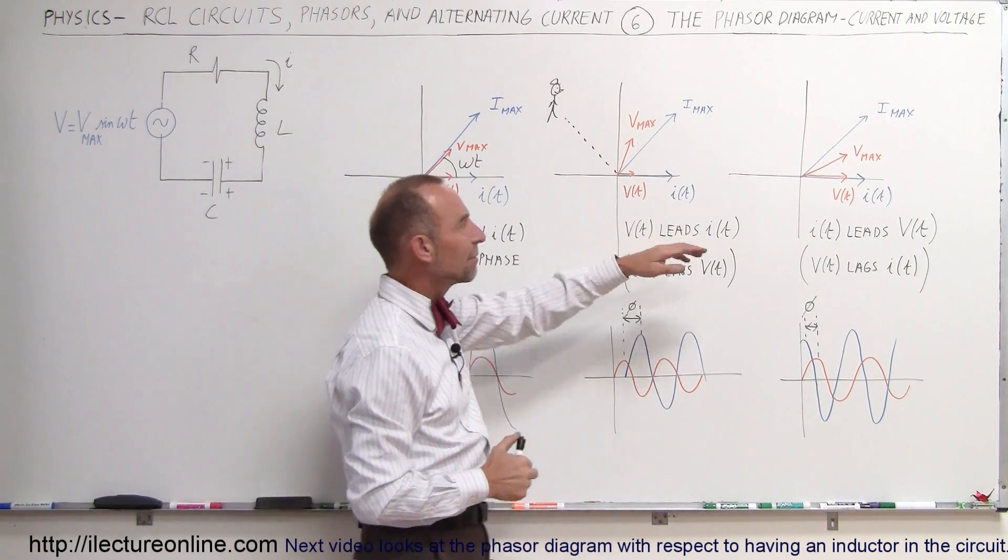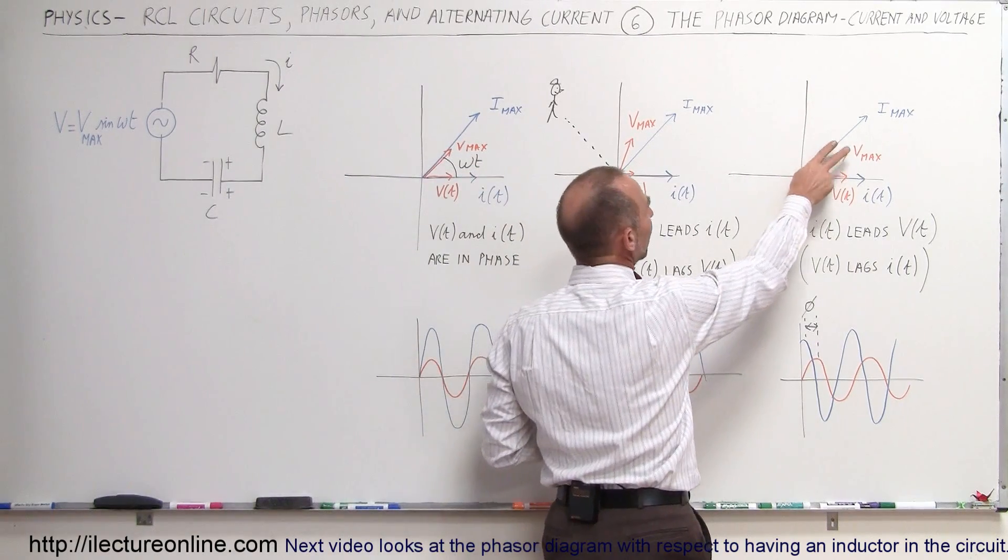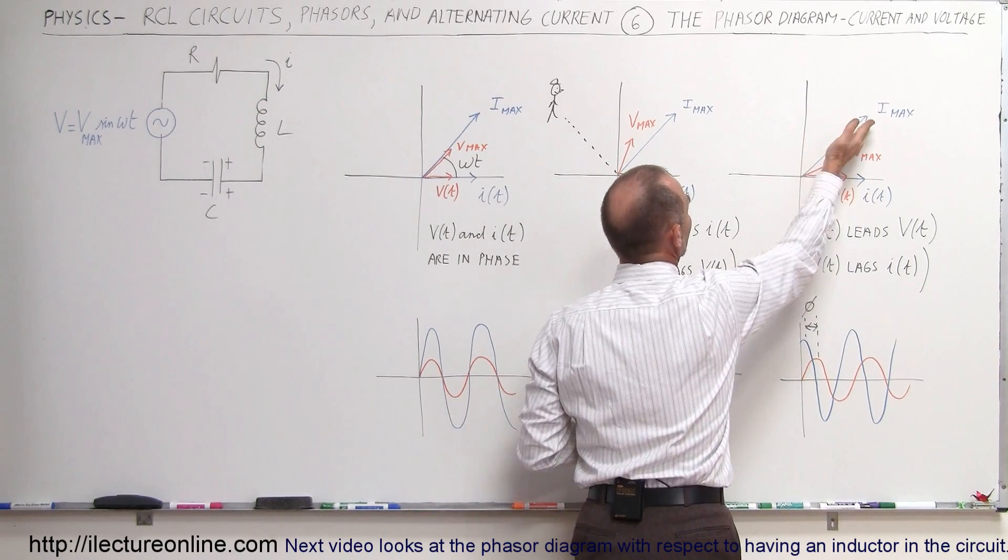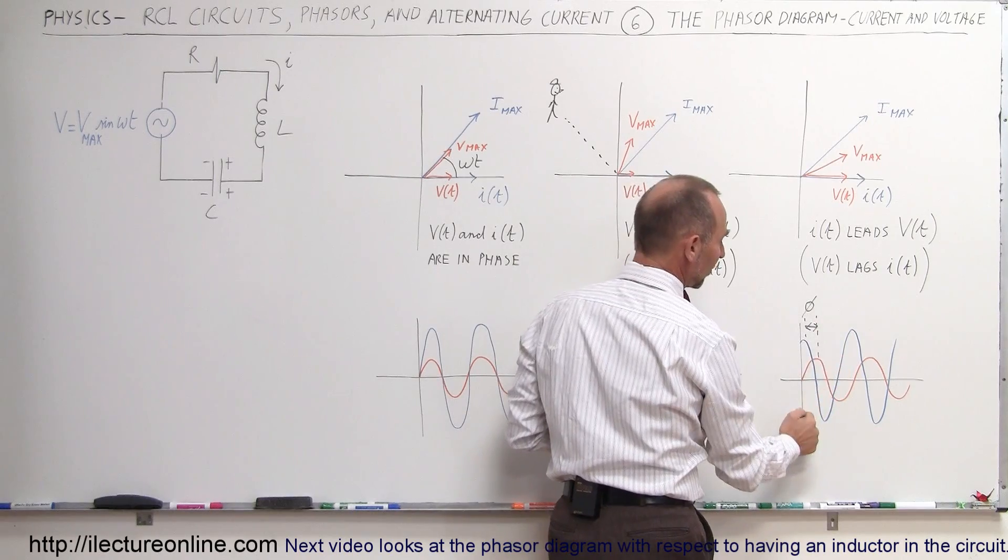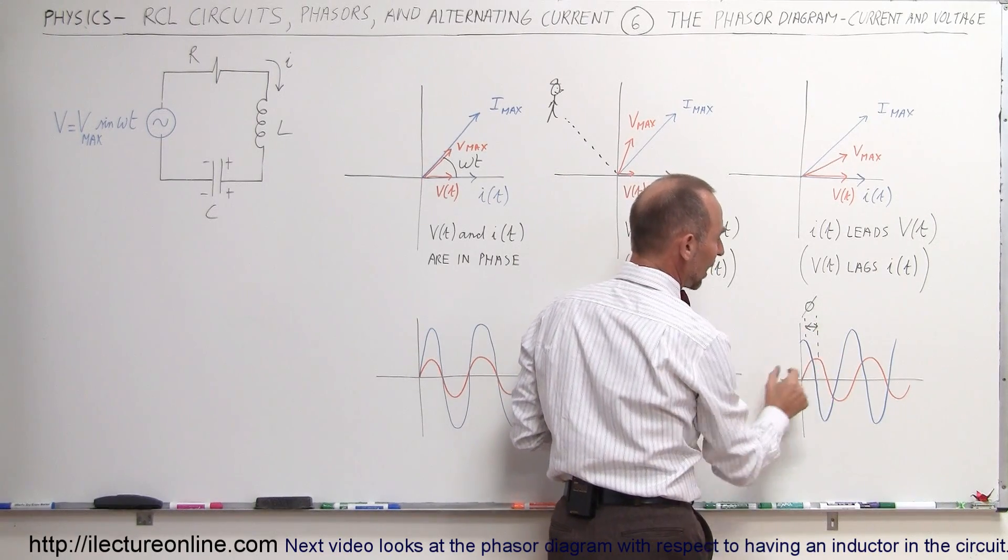On the third phase of the diagram, we can see that as they're rotating around, that the current will get to this point before the voltage, so therefore the current leads the voltage, and if we draw it like this, we can see that the current reaches the maximum value first, and then the voltage next.